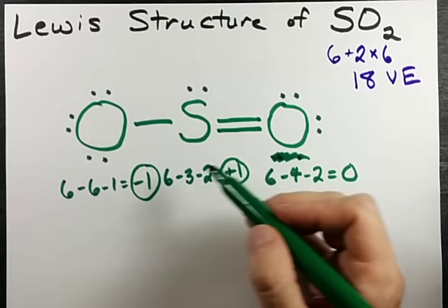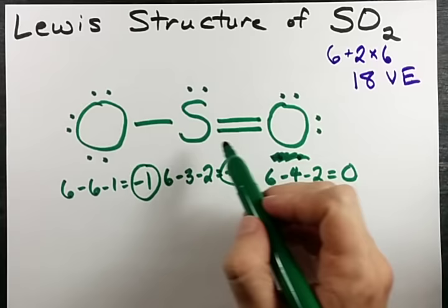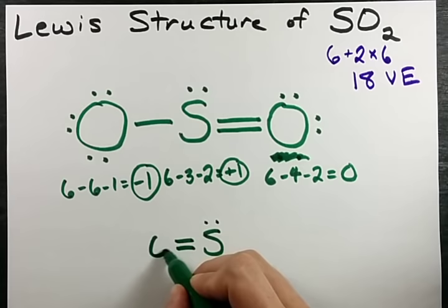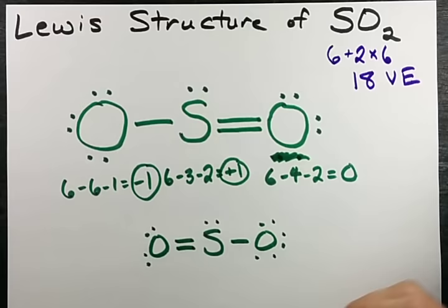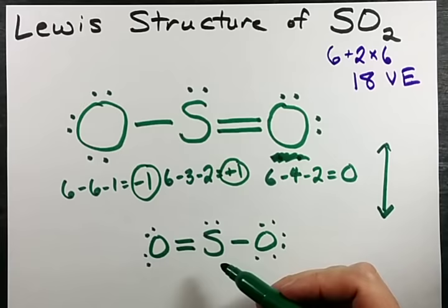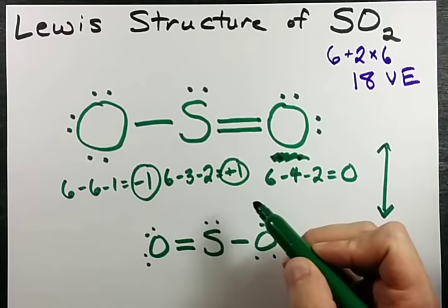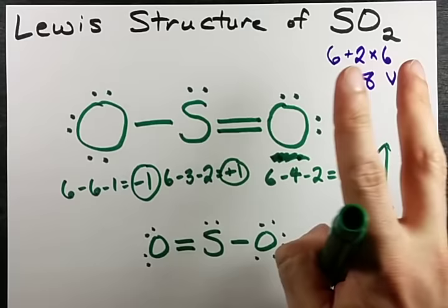But I do want to point out that the 2 electrons that we moved from the oxygen could have just as easily been brought by the other oxygen. We call these 2 structures resonance structures. And the actual structure of SO2 has bonds that aren't quite single and not quite double. They're more like 1.5 bonds each. It's a hybrid structure that is halfway in between this one and this one.